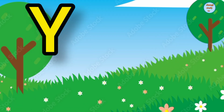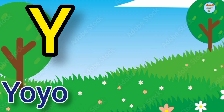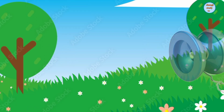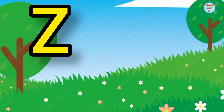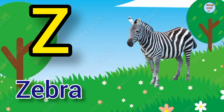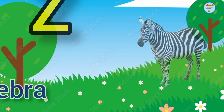Y. Y for yoyo, yoyo means yoyo. Z. Z for zebra, zebra means chitthidarpaypay.